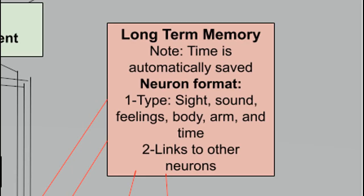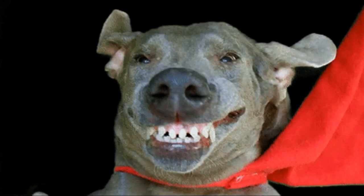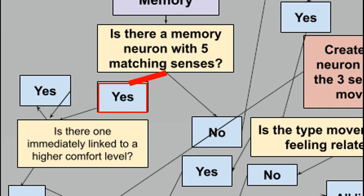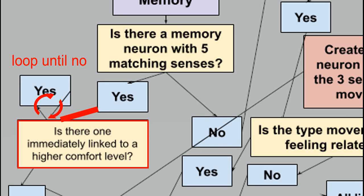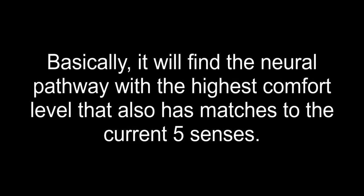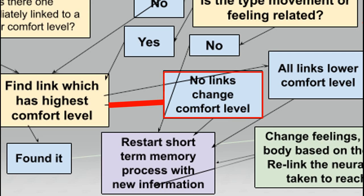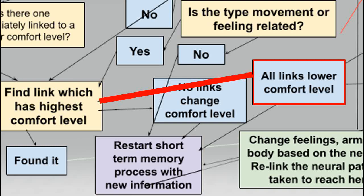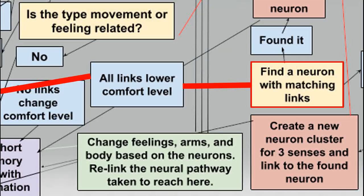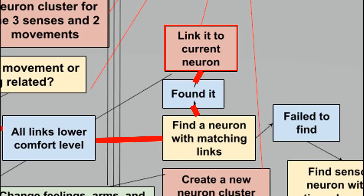Each time a neuron cluster is created, it will also create a neuron for the time of creation. If there initially was a neuron cluster with all five matching senses, then it continues searching for other matches that are also linked to other clusters with a high comfort level, until it finds the best one. If it cannot find links which change the comfort level, it will ignore this line of thought and reset the short-term memory process. If every single link leads to a lower comfort level, then it will find another neuron cluster describing a similar situation, link it to the current neuron cluster, then repeat the whole process. This makes it so the AI can learn to escape a situation like this.